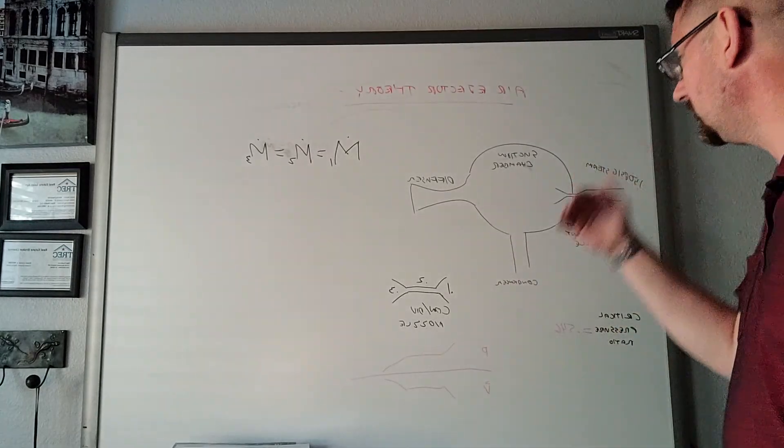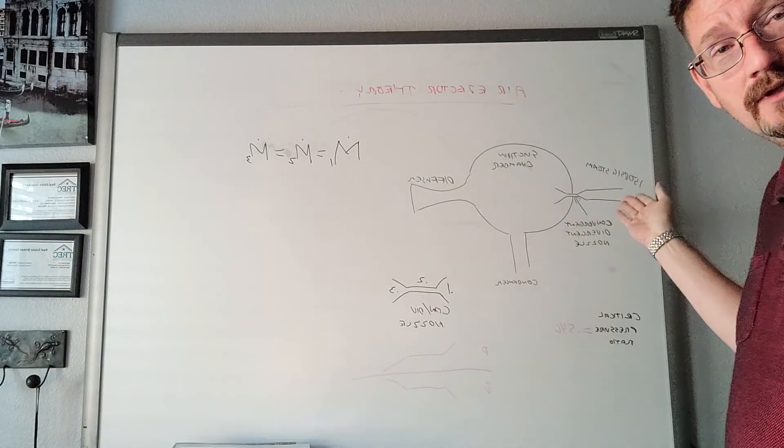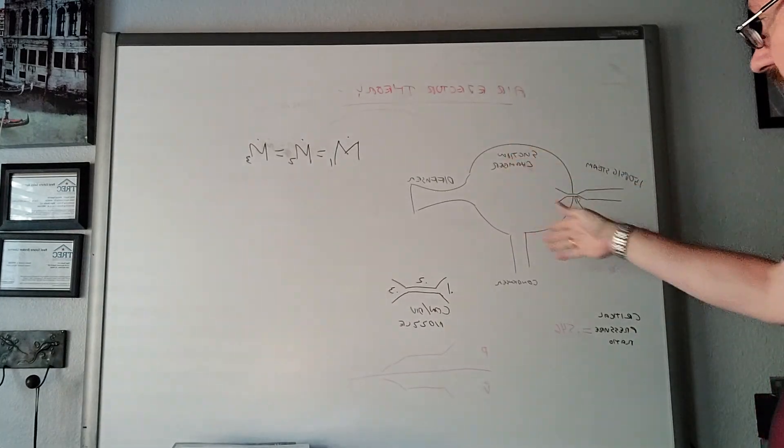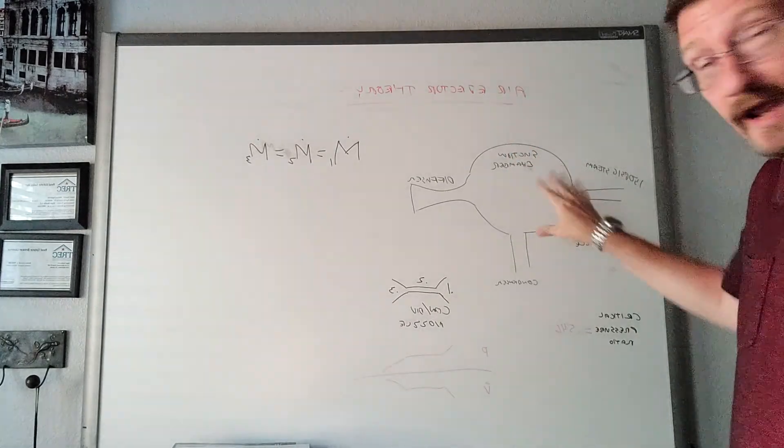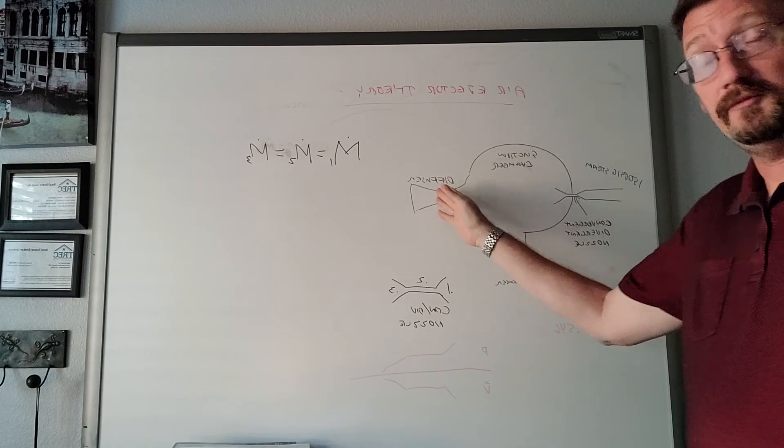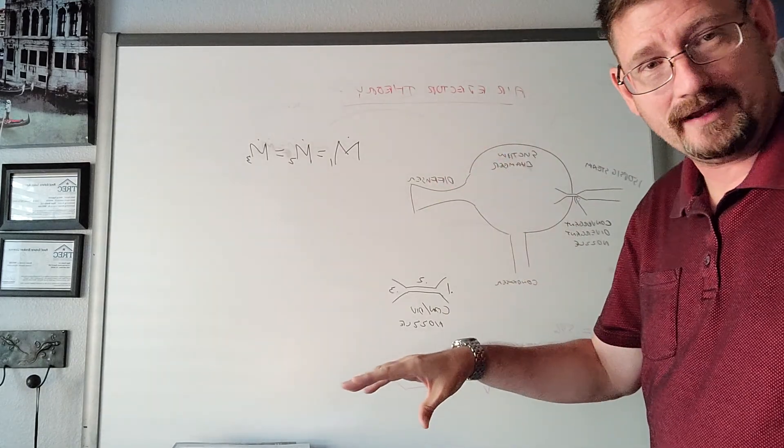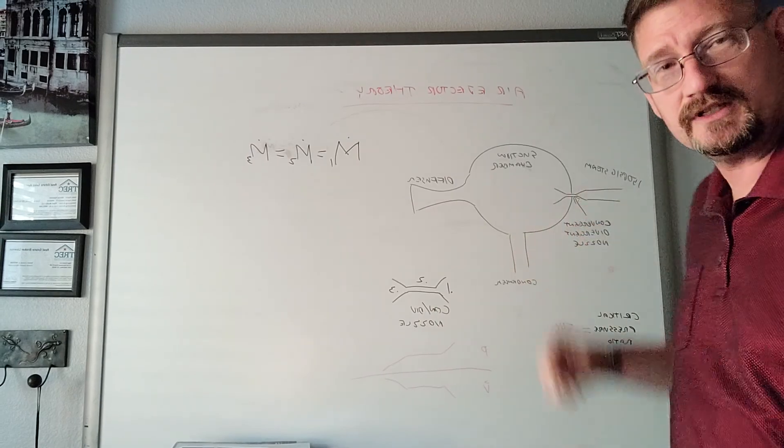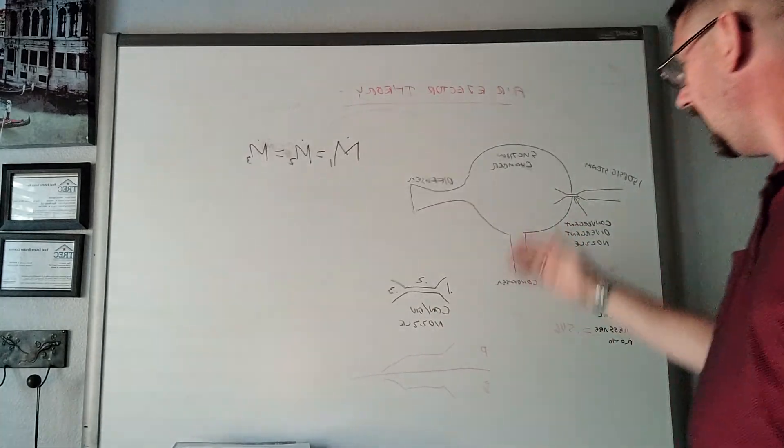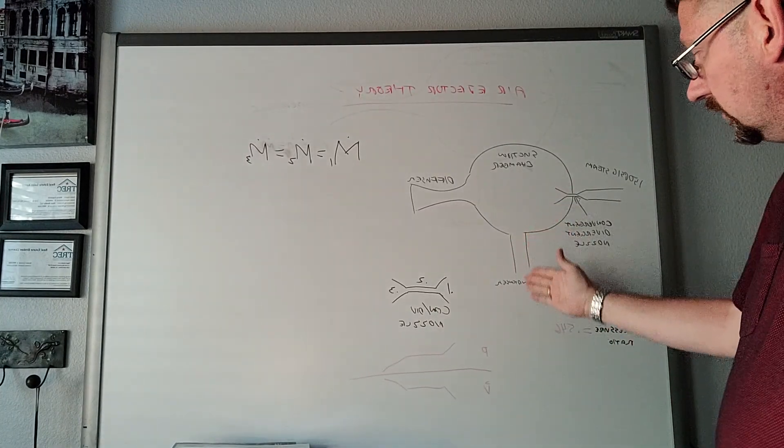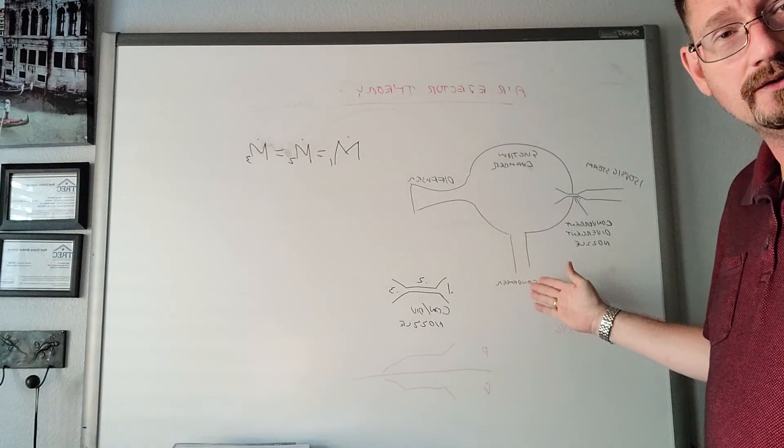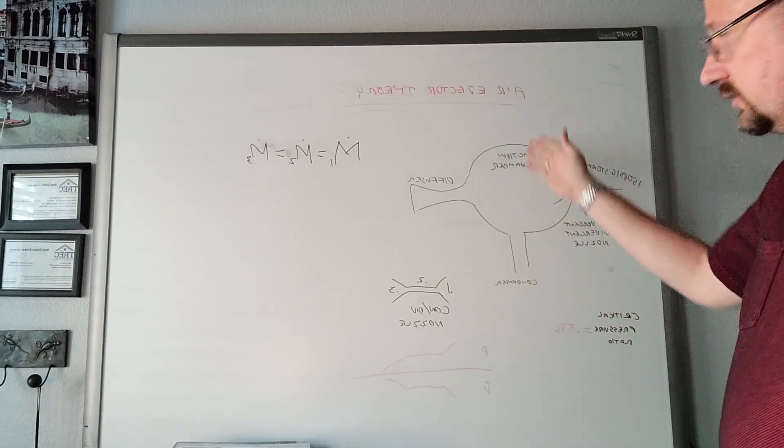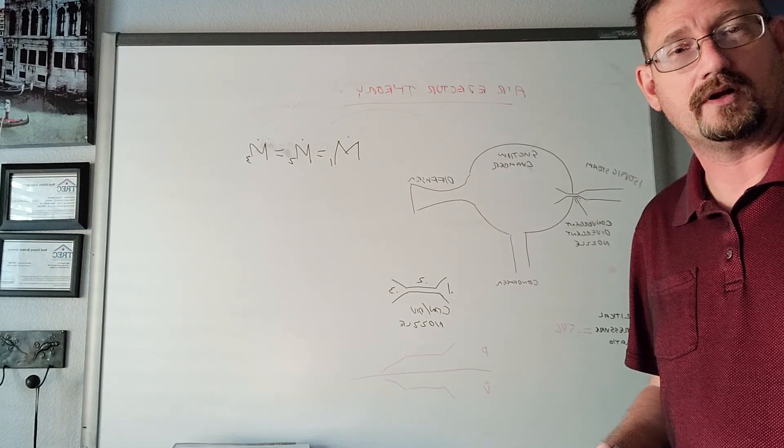Your basic parts: you've got a convergent-divergent nozzle, a suction chamber where all the magic happens, a diffuser to slow it back down—because we're going supersonic, that's right, little sonic booms inside here—and piping going down to our condenser where we draw those air and non-condensable gases out.